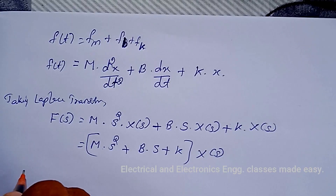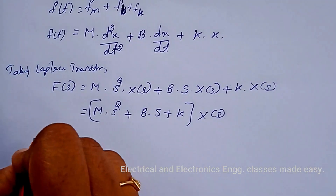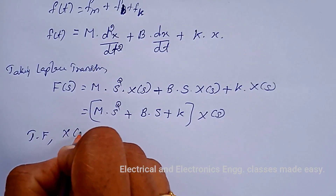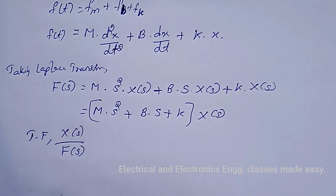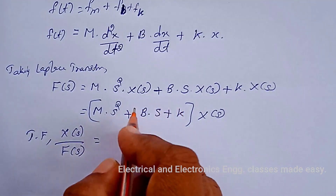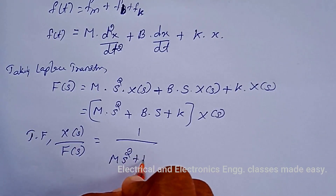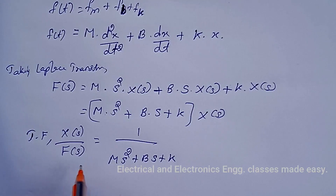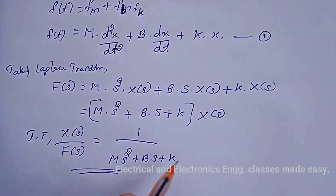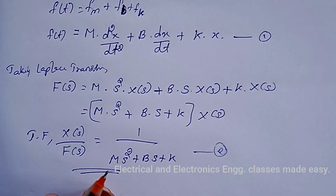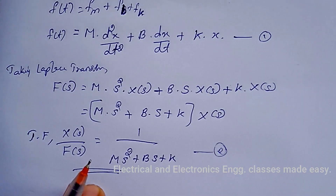The transfer function is X(s)/F(s) = 1/(ms² + bs + k). This is the transfer function, and the differential equation is F(t) = m·d²x/dt² + b·dx/dt + k·x. We will do more problems in the next classes. Thank you for watching — please like, share, and subscribe to the channel.